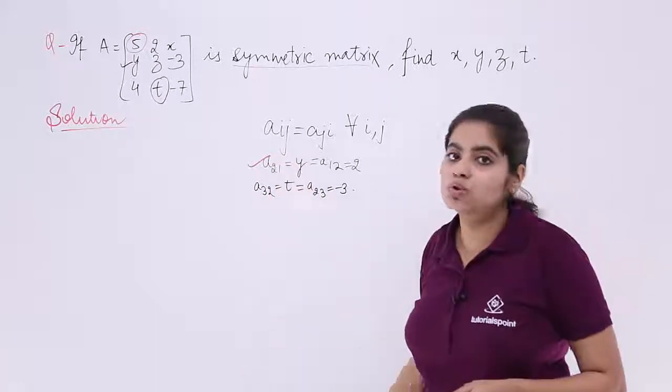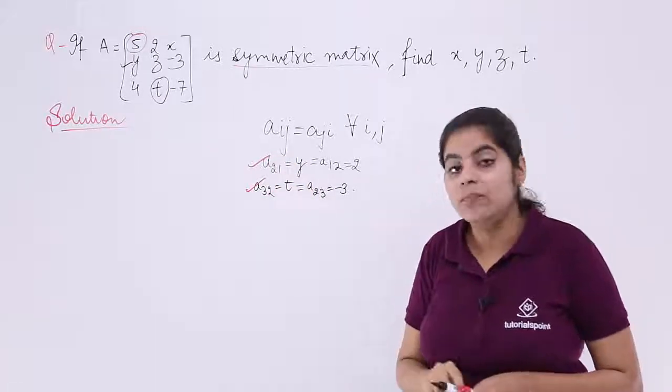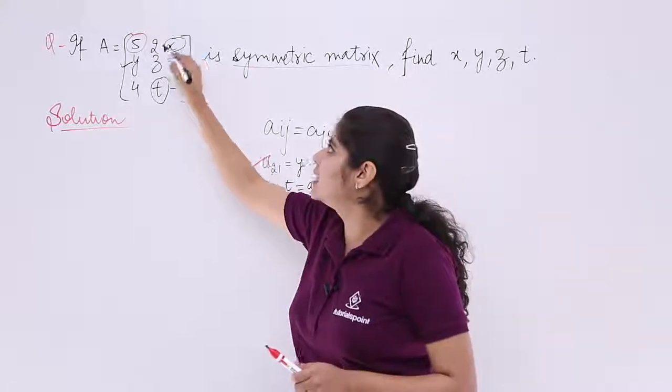That means y is known to me now, T is known to me, we are left with two more values. Next, move to the next unknown variable. Say it is x.